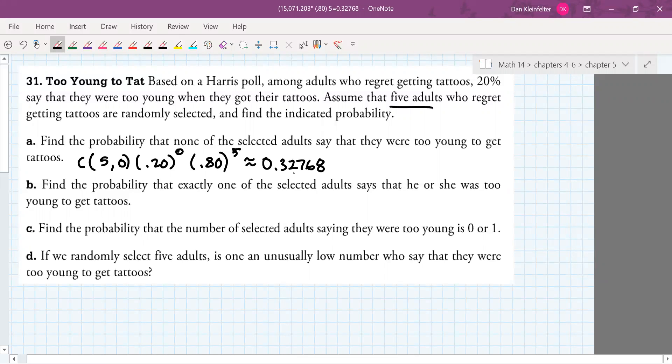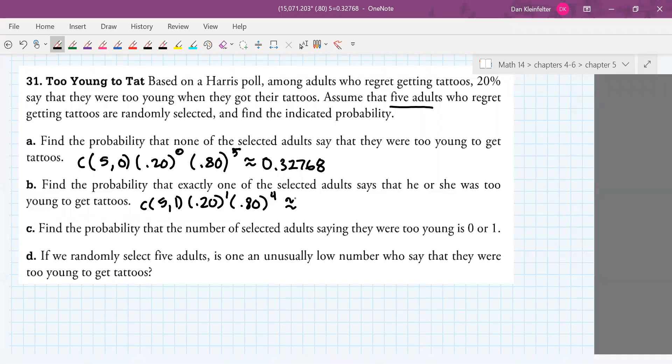Next, we want to find the probability that exactly one of the selected adults says that he or she was too young. So one thing nice about this is once you kind of get the hang of the setup, it is a lot easier to make kind of variations on the first question. So for this one, all I needed to do is change the zeros into ones. And then remember that if we're selecting a total of five people, that if it was one success, then the remaining four had to have been failures.